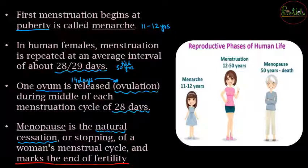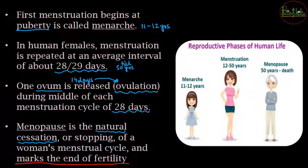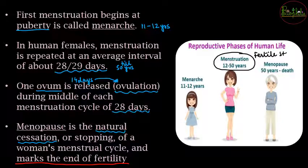Menopause occurs after age 50 and continues till the death of that female. The fertile age is between menarche and menopause — as long as menstruation is ongoing, the female is considered fertile. So the reproductive phases of a human female go from menarche, through the fertile stage, to menopause.